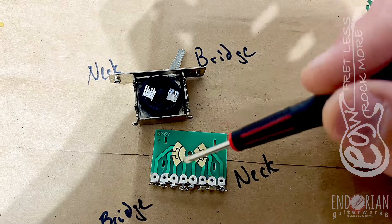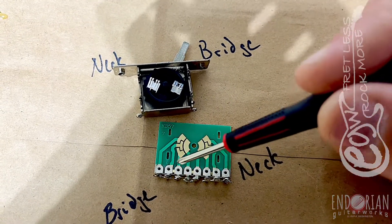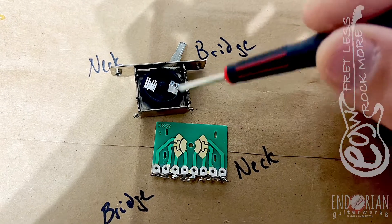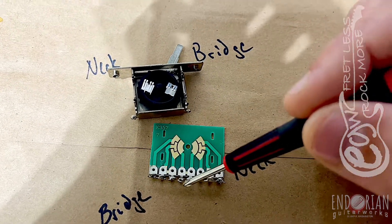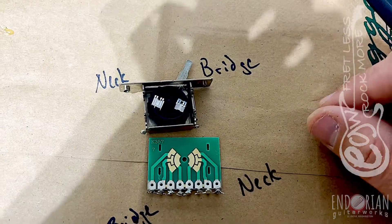When you're in third position, you will only be getting the input from this lug. It hits the plate, goes across the jumper, out here to the output. Let me know if you have any questions.